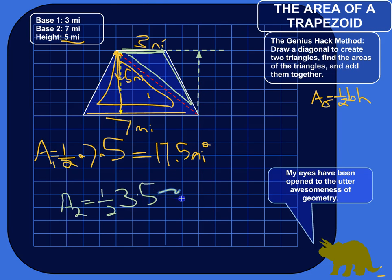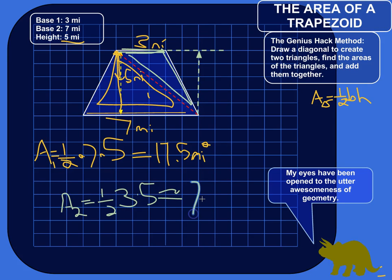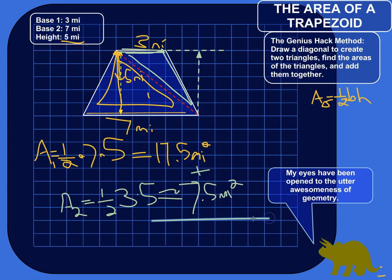The area of triangle two is one-half base times height: one-half times three times five. Three times five is fifteen, and half of that is seven point five square miles. Then we just add the areas of the two triangles up: seventeen point five plus seven point five is twenty-five square miles. That's the area of the trapezoid.